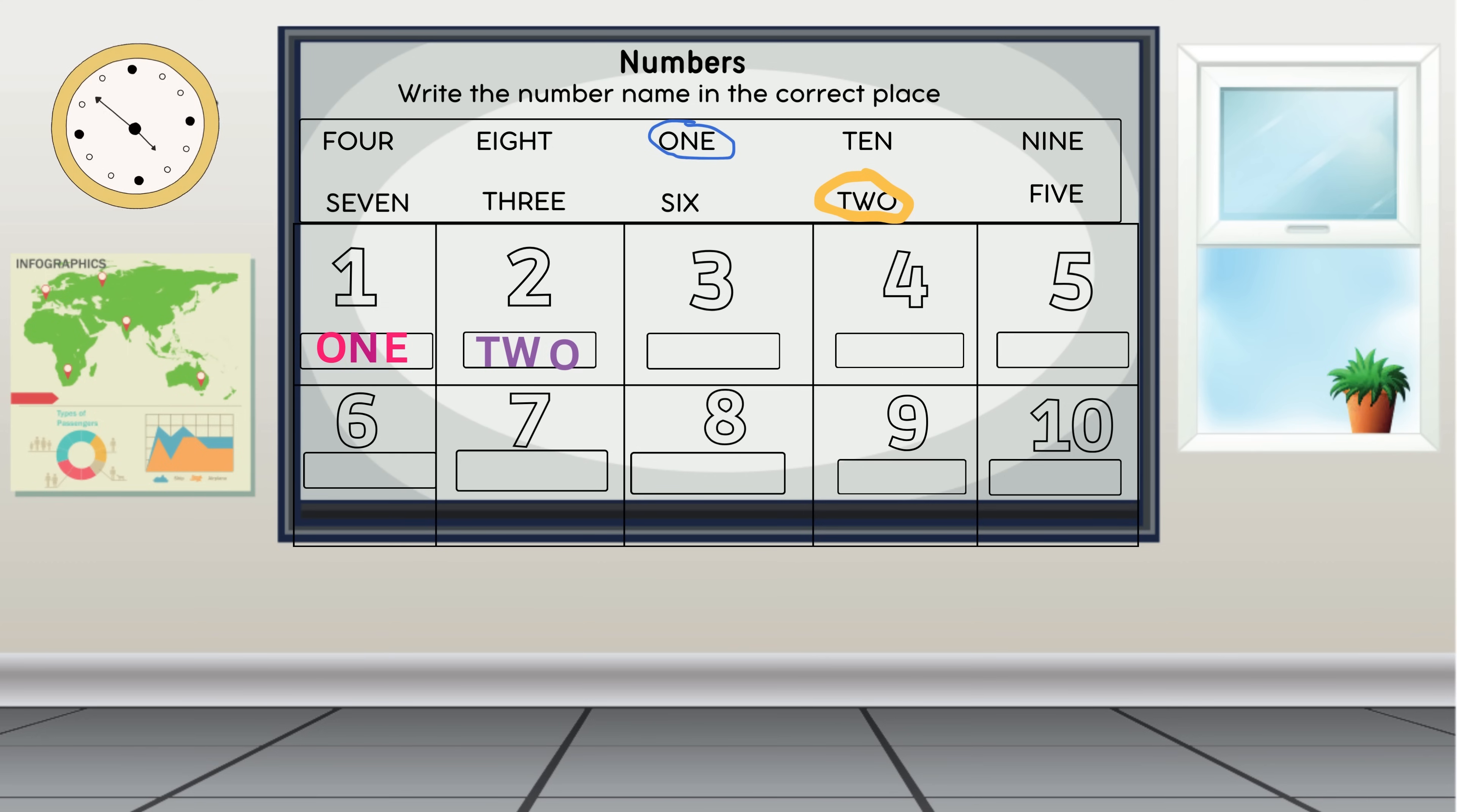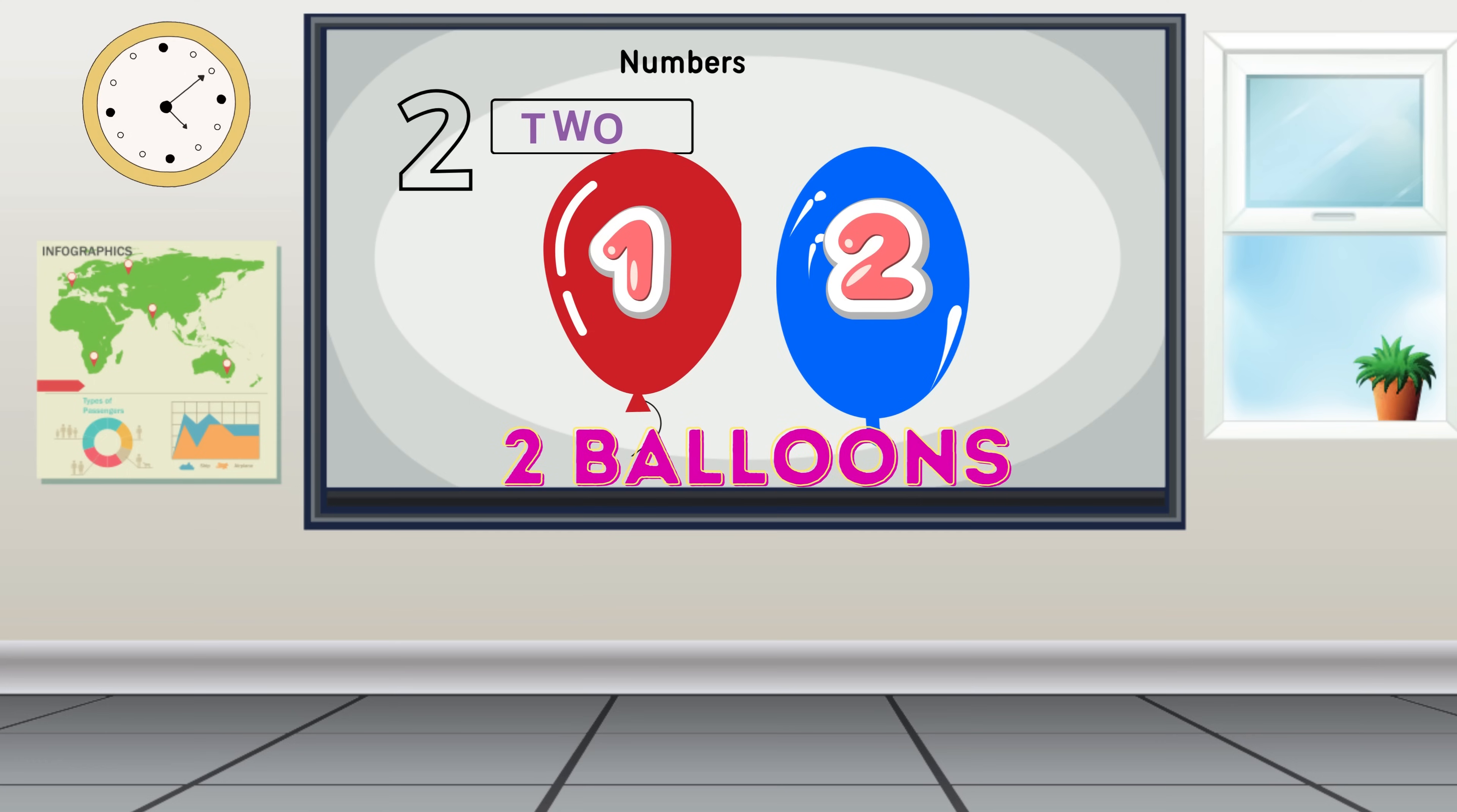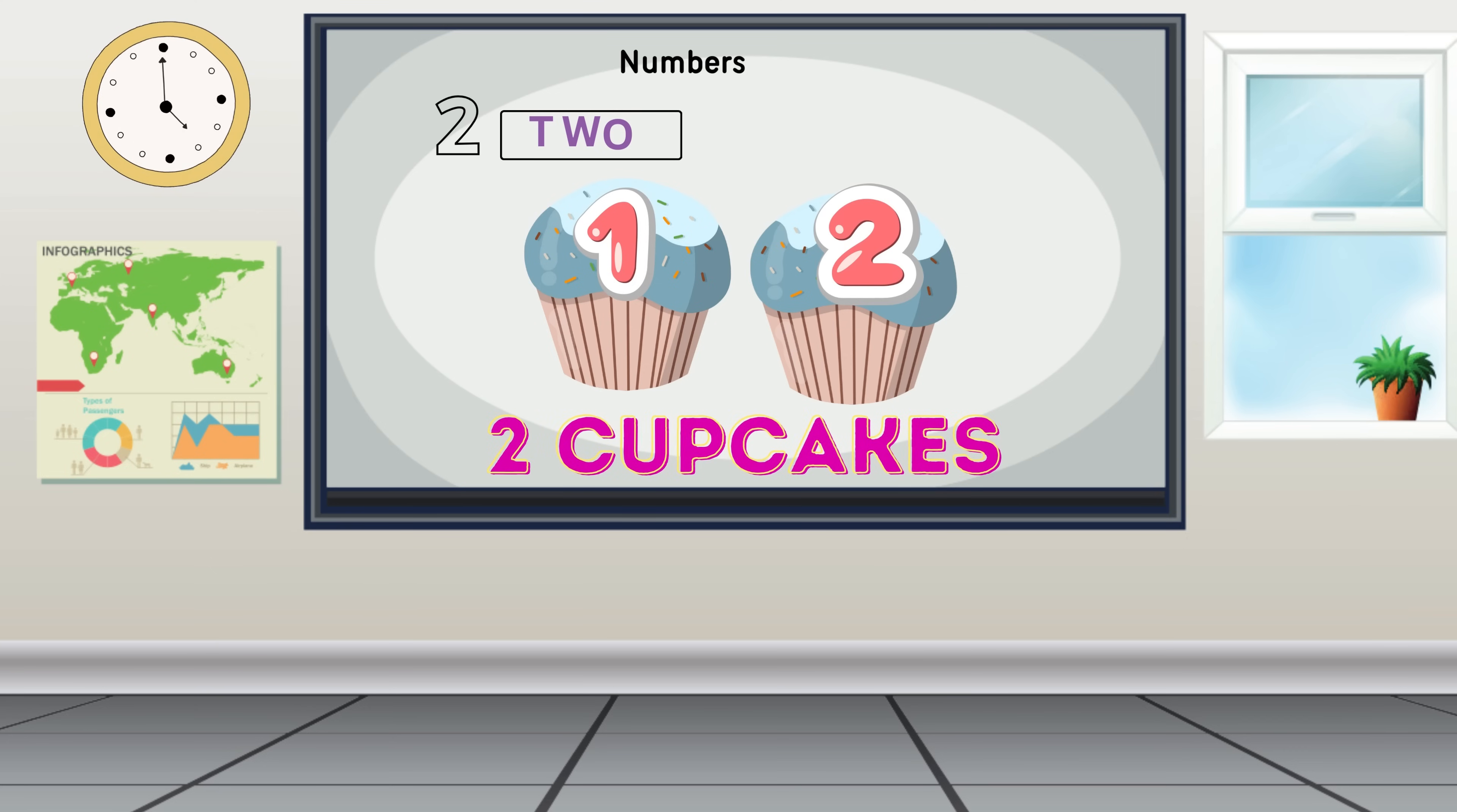Can you spell two one more time? T-W-O. Two is a special number because it means not just one, but two of something. Imagine you have two colorful balloons or two yummy cupcakes. Count with me: one, two, two balloons; one, two, two cupcakes. That's fantastic! You've just learned counting and the number name for two.